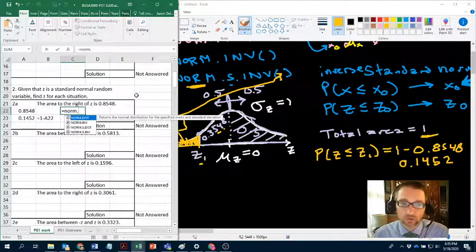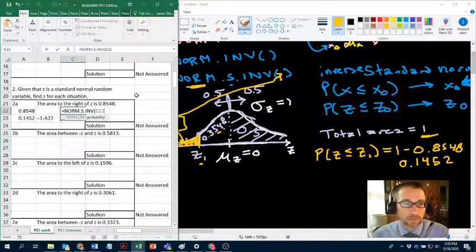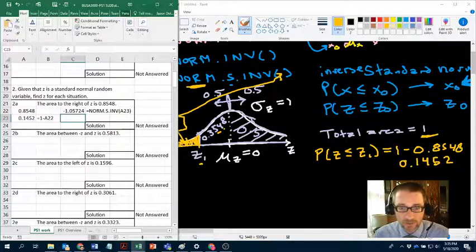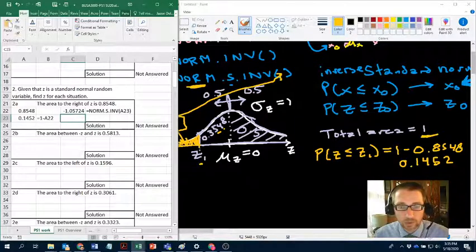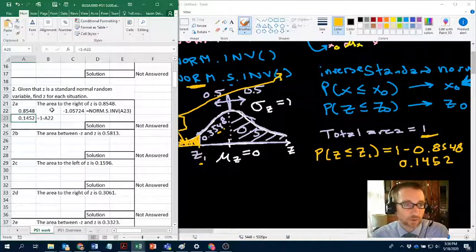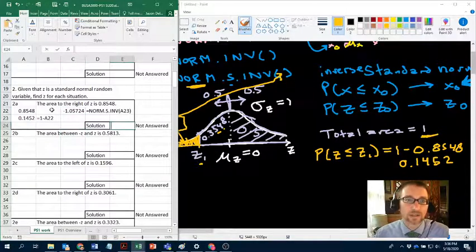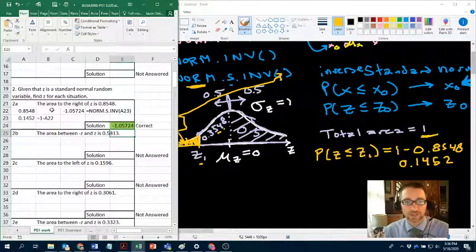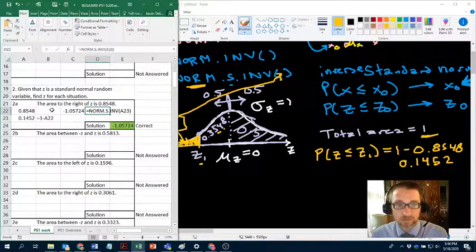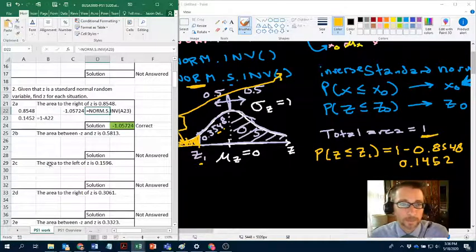And now to find that z, I'm going to use norm.s.inv. And then my probability is this value right here. So what this is saying is that if you have a standard normal distribution and you want a value such that the area to the right is 0.8548, that implies you want an area to the left that's 0.1452, and this is the value that gives you that area. And if we did this correct, it turned green. That's always very satisfying for me because I didn't know what the answer was going to be.